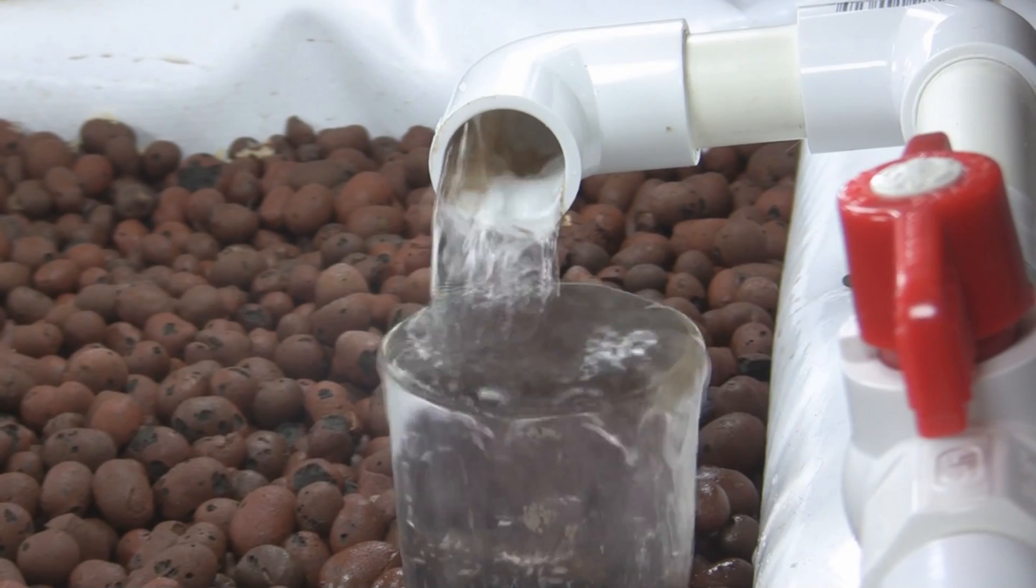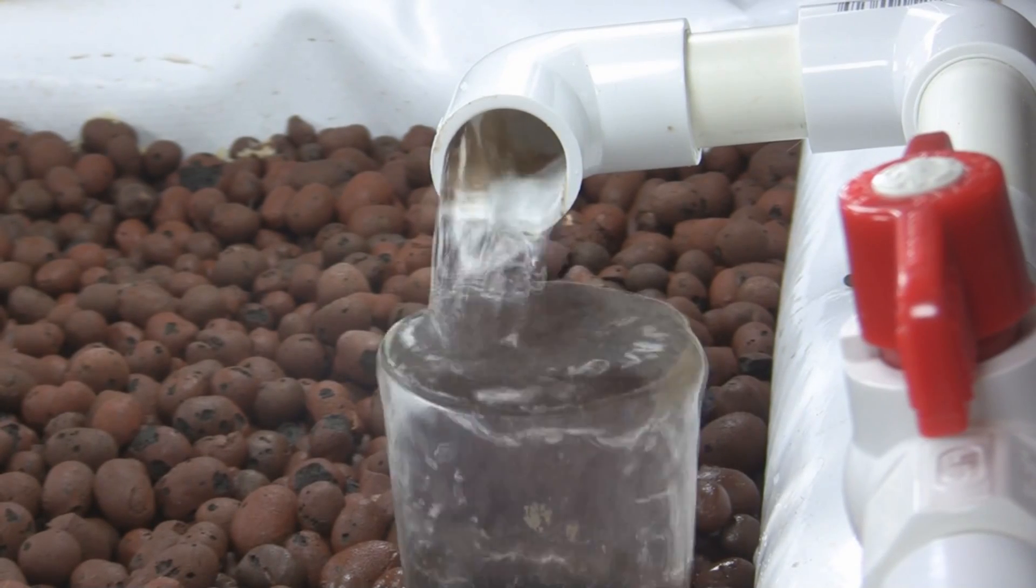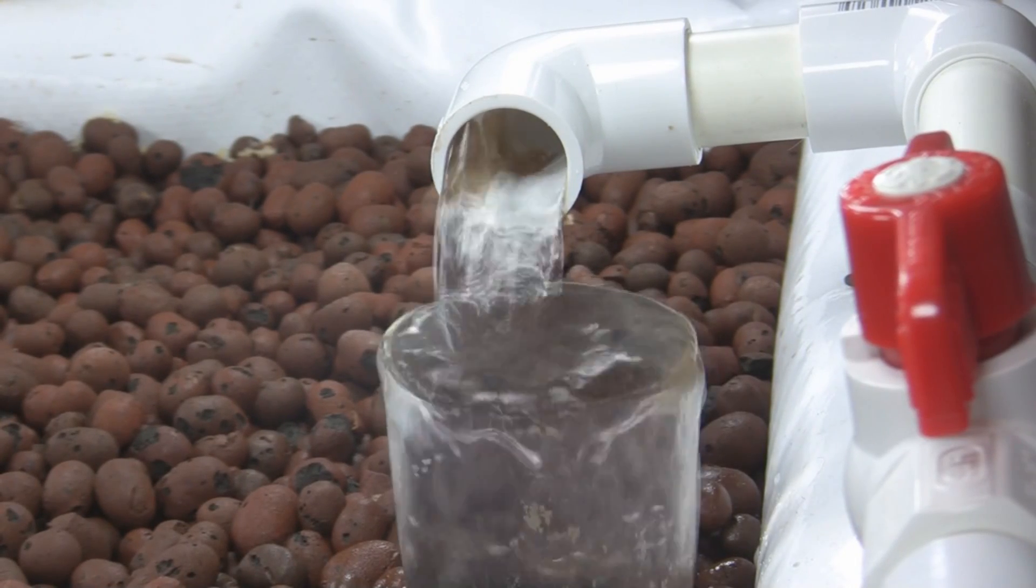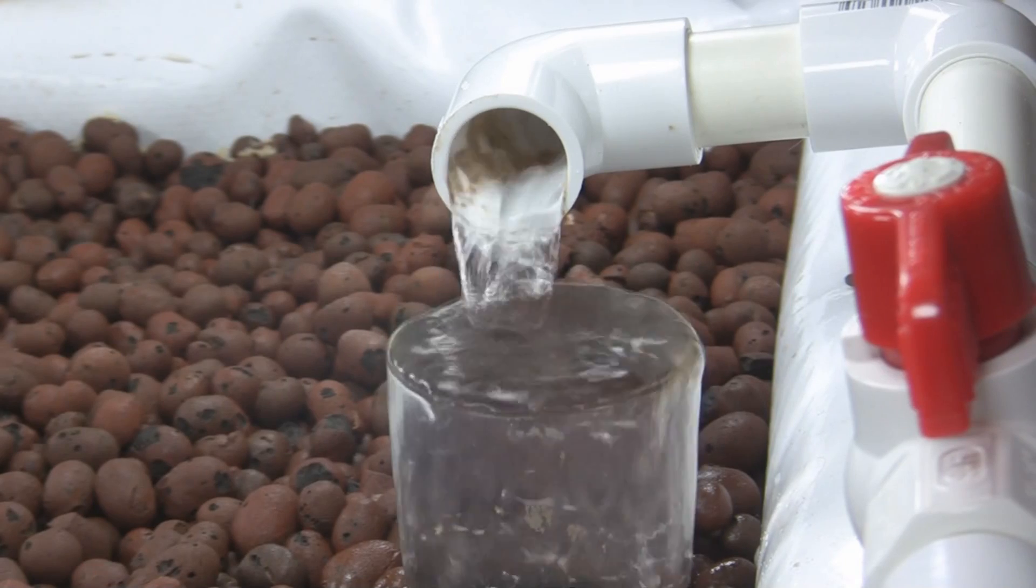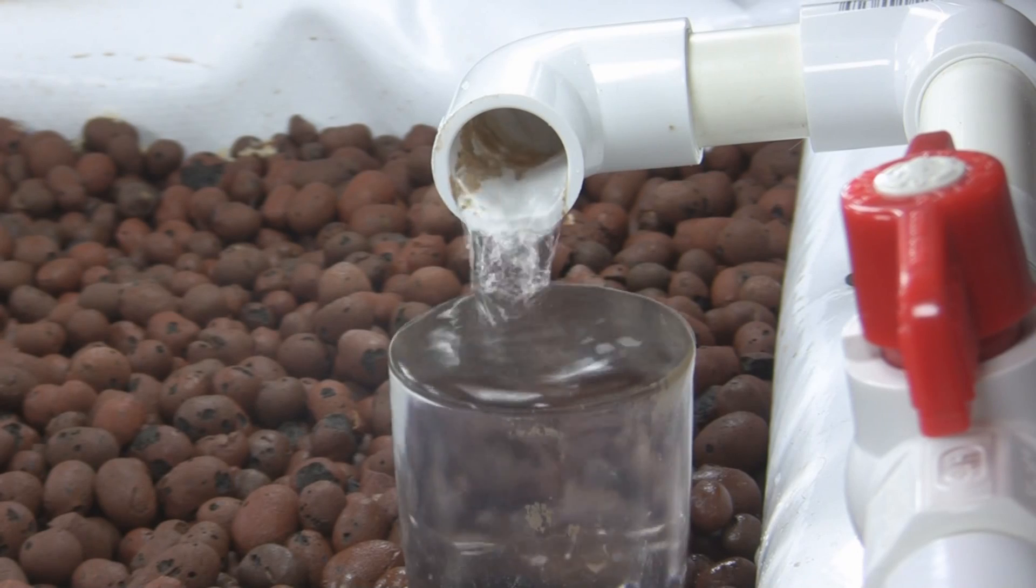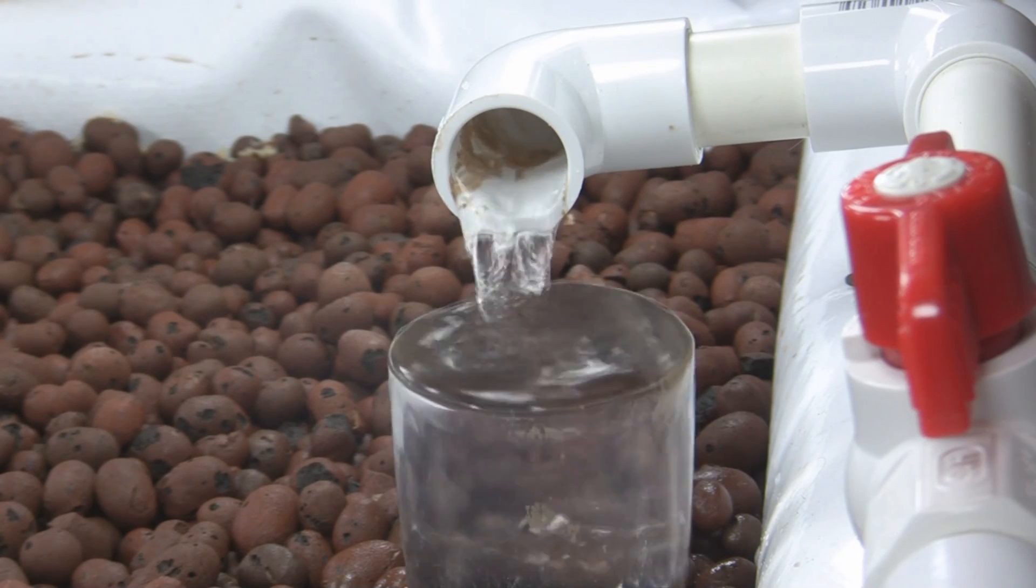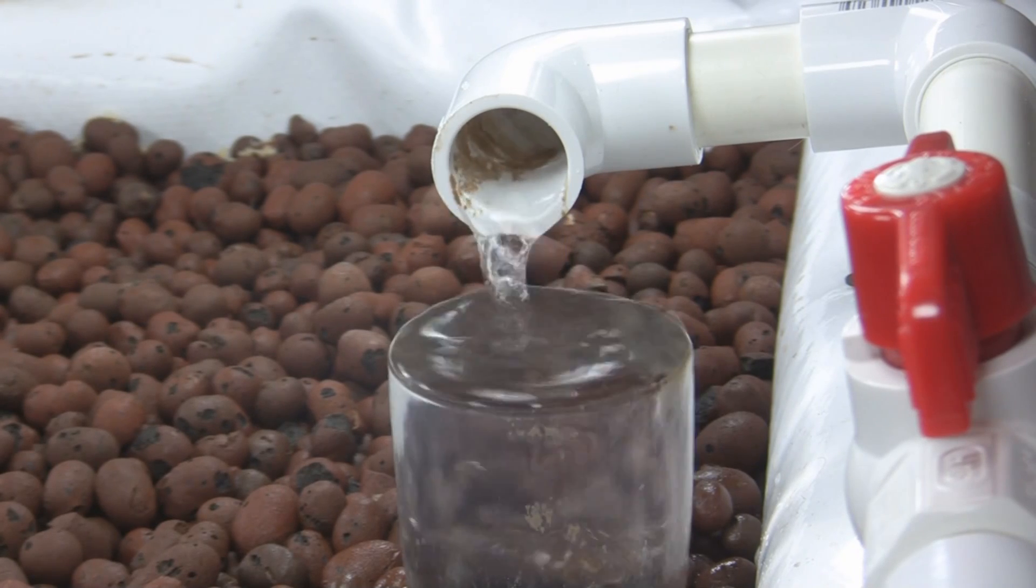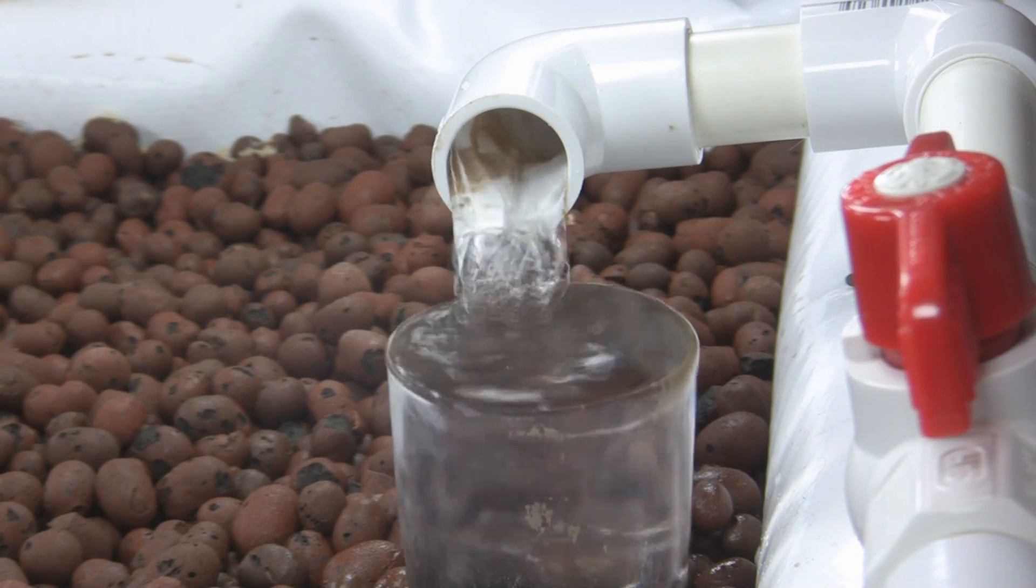So you definitely should adjust your flow rates—try different flow rates. This would be too much, so we have to turn it down. That would be too little. You have to find that zone where your flow rates are going to work for your siphon, both starting and stopping.